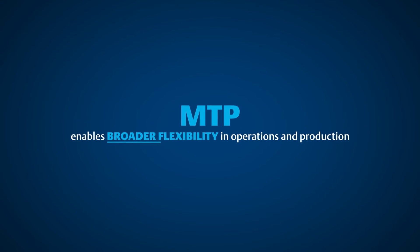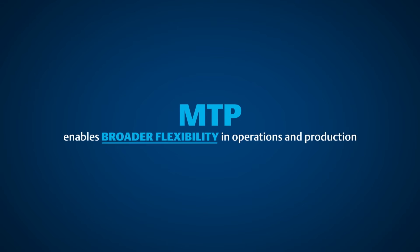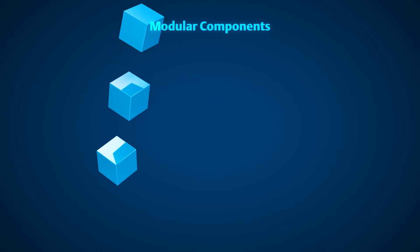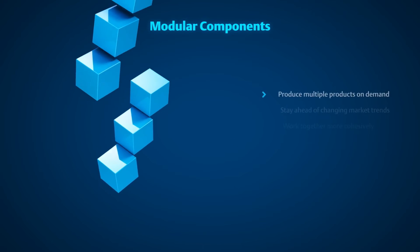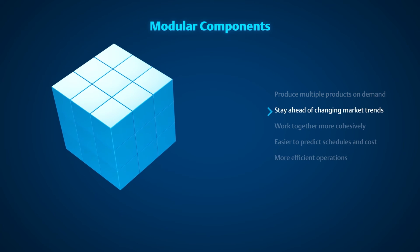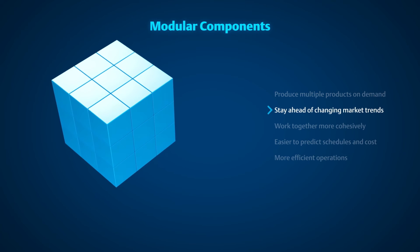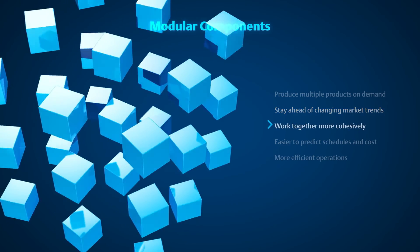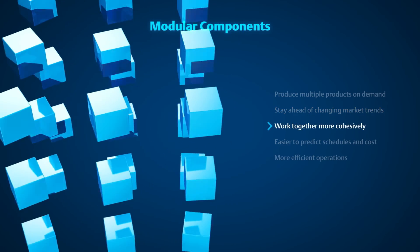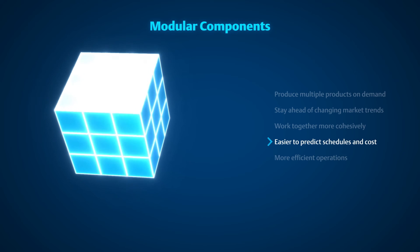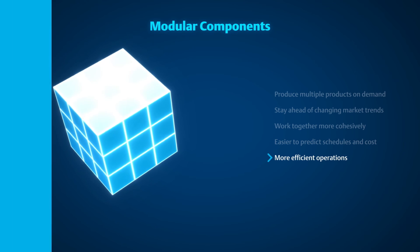MTP also enables broader flexibility in operations and production. Using modular components, manufacturers can produce multiple products on demand to stay ahead of changing market trends. MTP allows each component to work together more cohesively, making it easier to predict schedules and cost for more efficient operations.